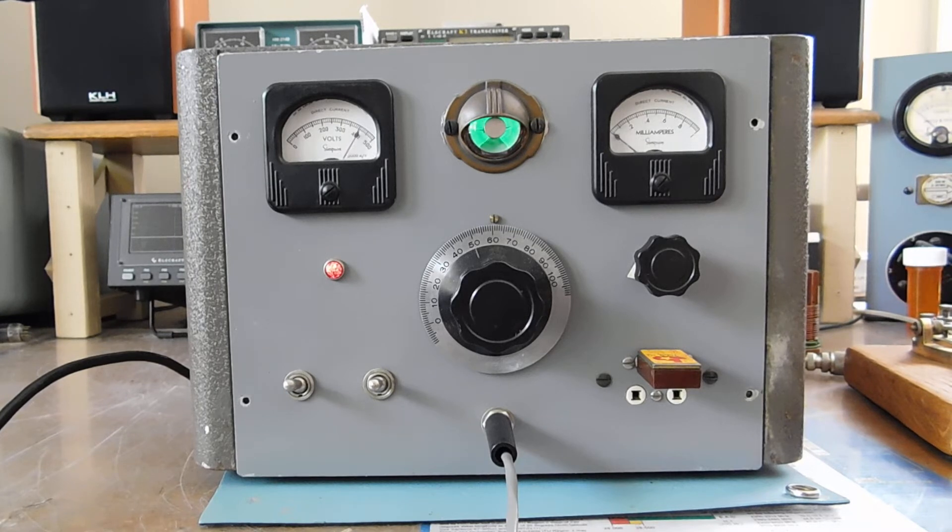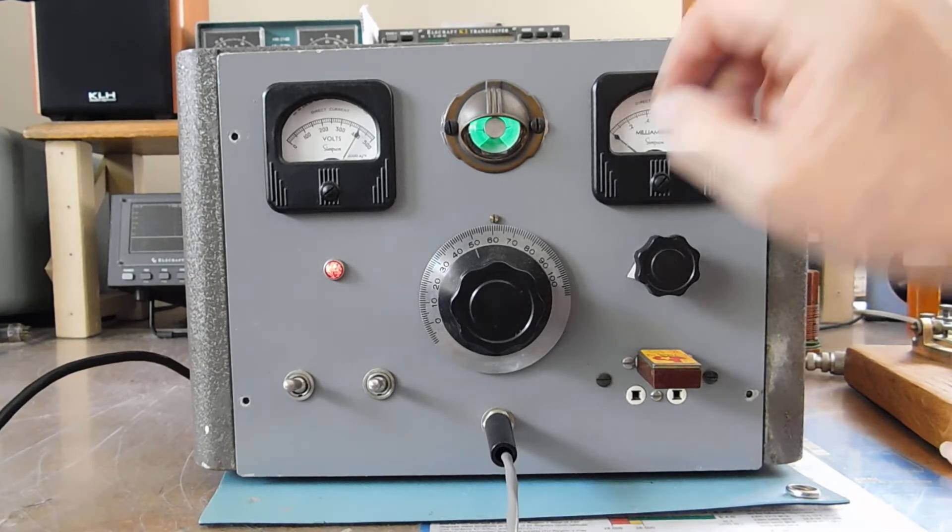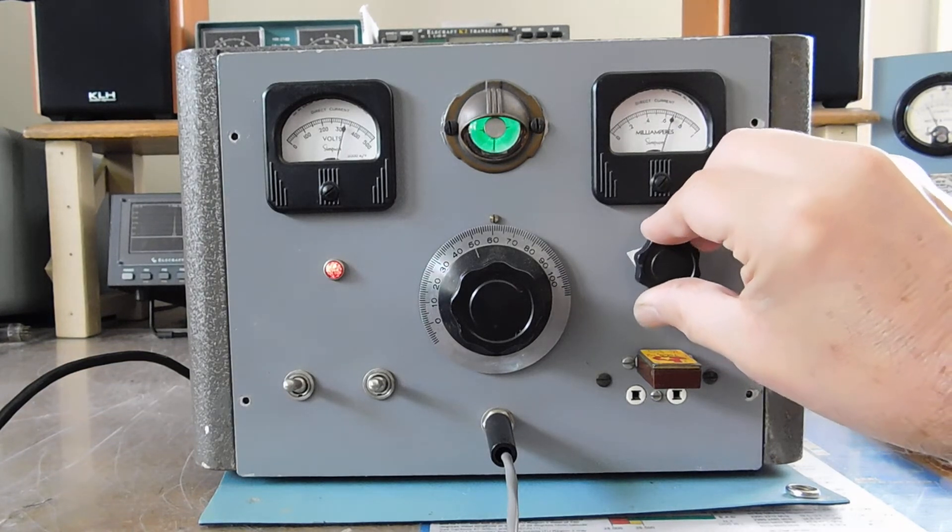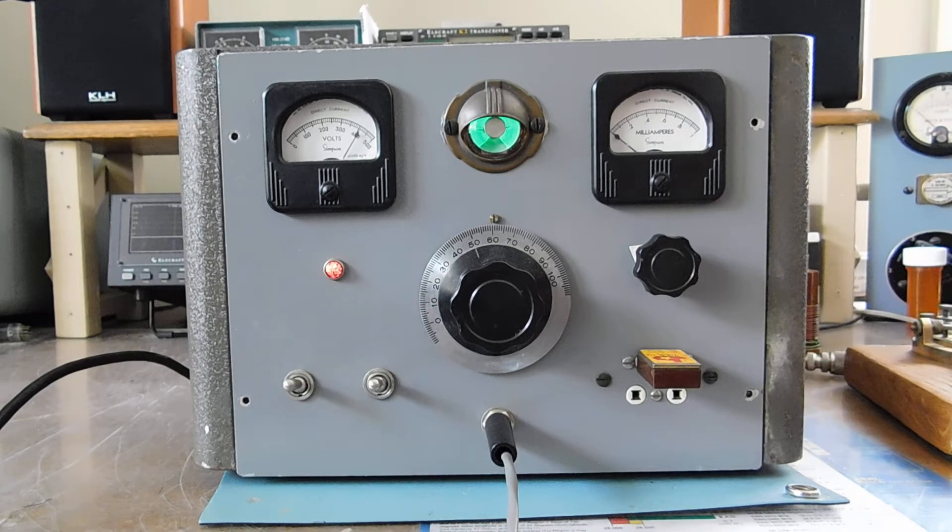About 65 mils. And plate voltage drops to about 320 or so. But here's the deal now. Now if I adjust this control, watch the magic eye tube there. There we go. A little eye candy for you.